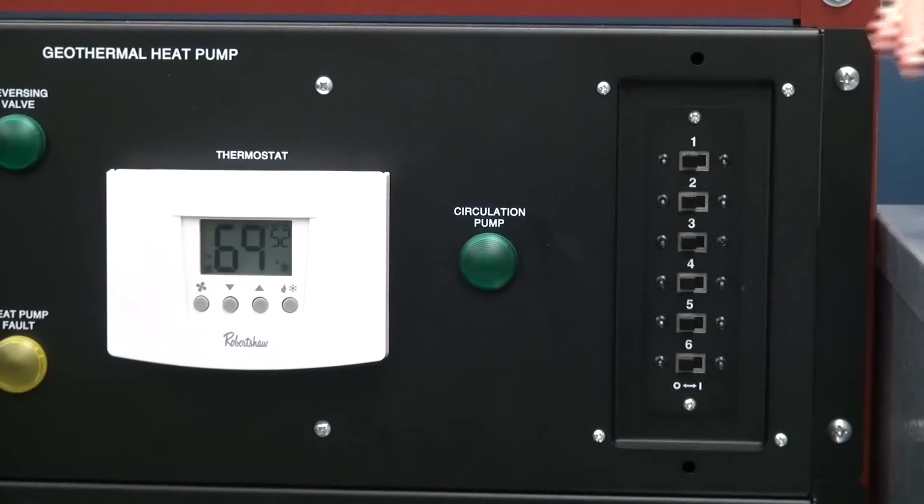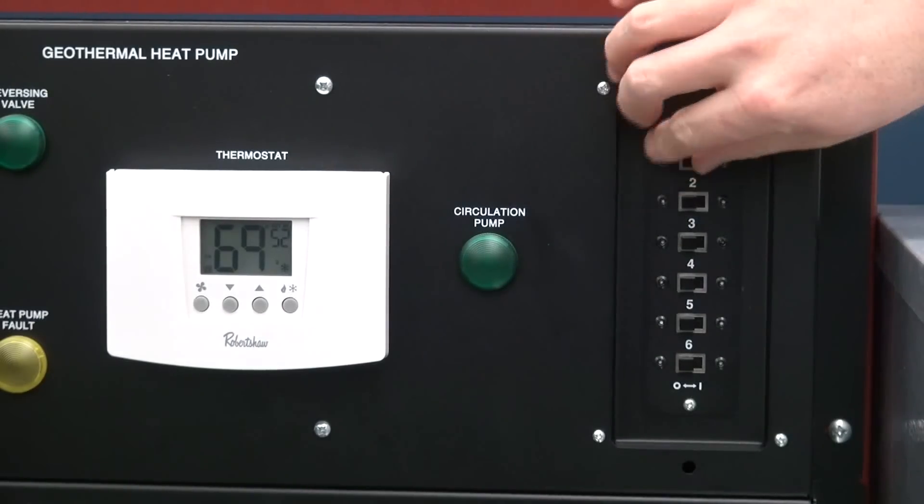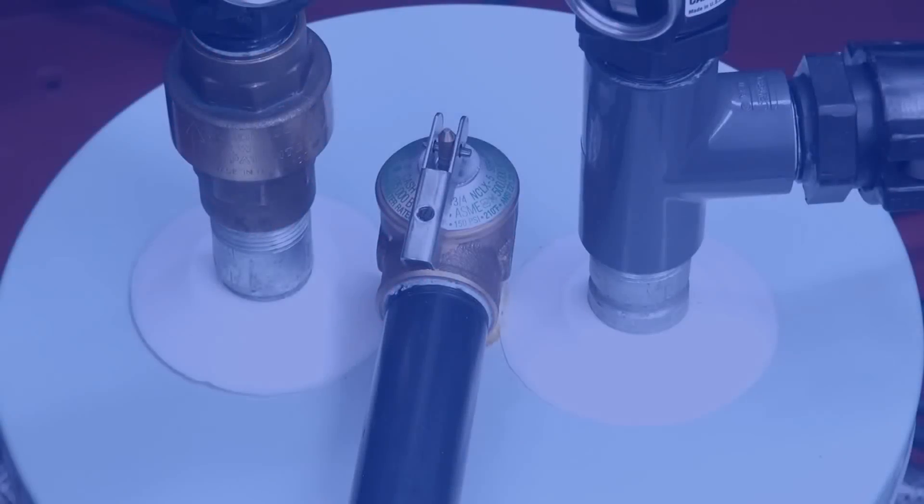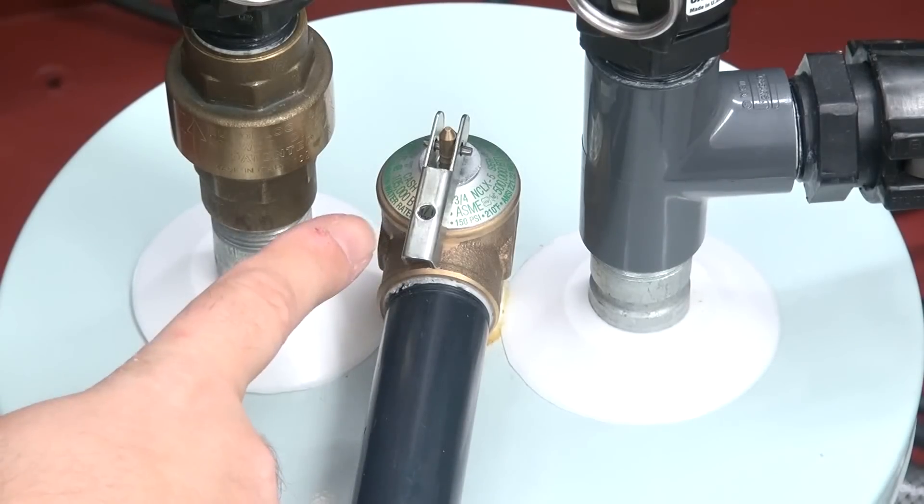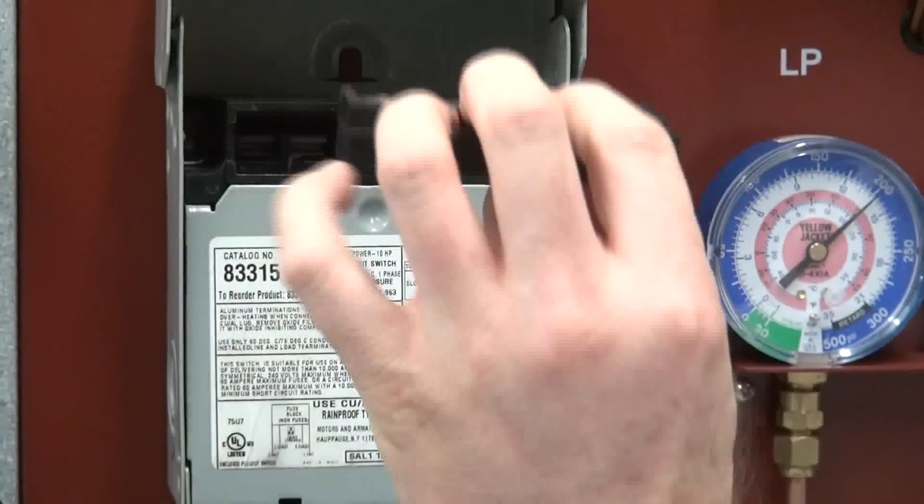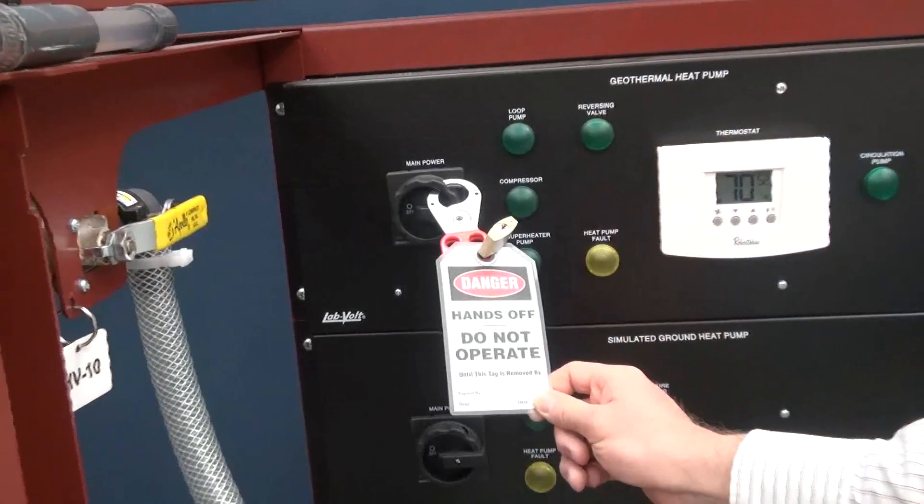To properly teach troubleshooting, the system has six fault insertion switches that can be used by the teacher. Some of the safety devices of the training system are high pressure control, relief valve, frost sensor, fuse and breaker, pull-out disconnect switch, and tag and padlock.